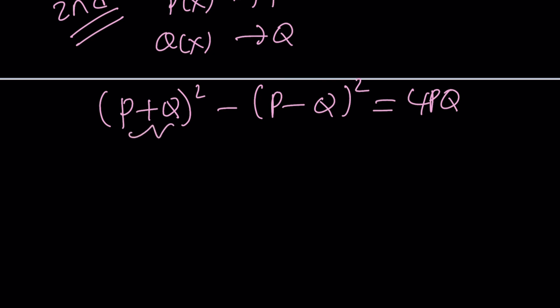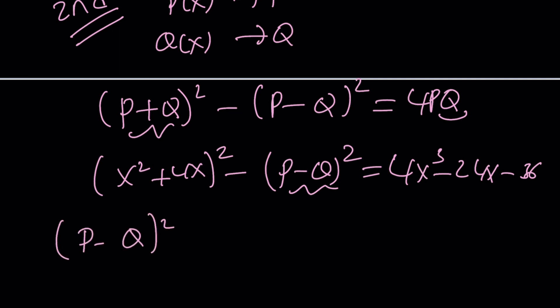Now notice that we have the sum, which is (x² + 4x)². This is given. I don't know P - Q, but I also know the product. If I multiply that product by 4, that was x³ - 6x - 9, it will be 4x³ - 24x - 36. The goal is to solve for (P - Q)².